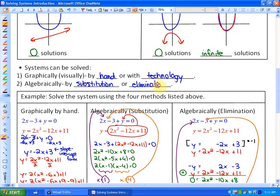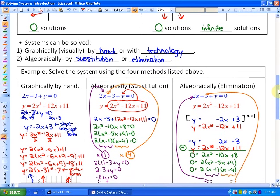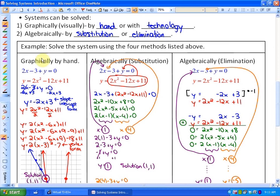So what we're going to do right now, or what I'm going to show you is, with all the work already shown, I'll talk you through the examples really quickly, is all four methods and how it relates to the exact same example. So the system is right here. 2x minus 3 plus y equals 0. That's a linear function. There's no quadratic here. And y equals 2x squared minus 12x plus 11, which is a quadratic function.